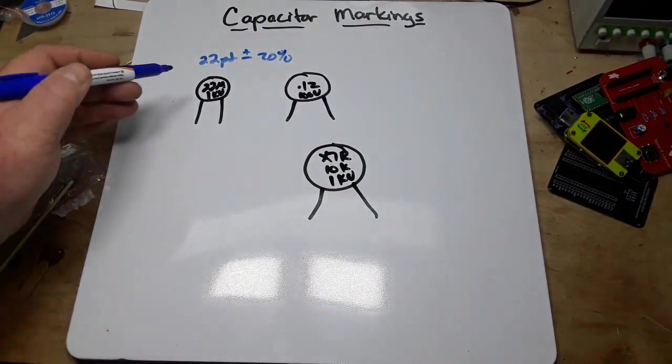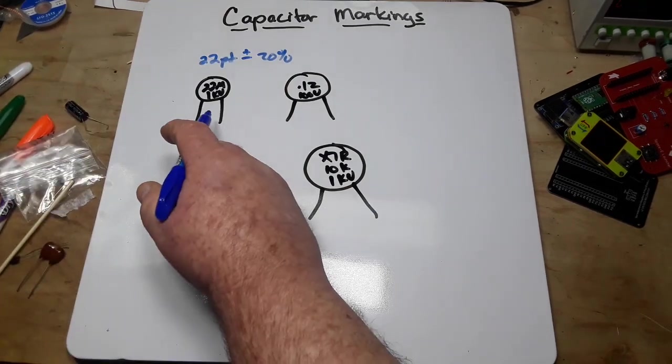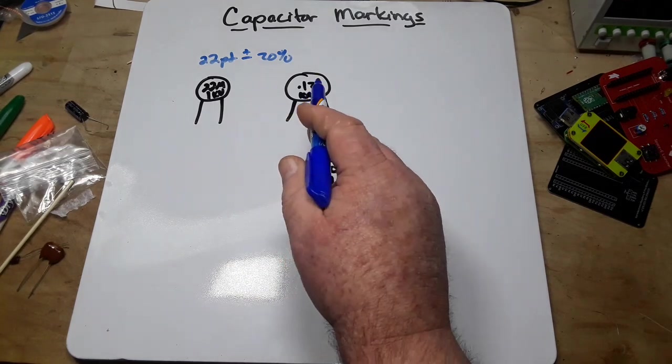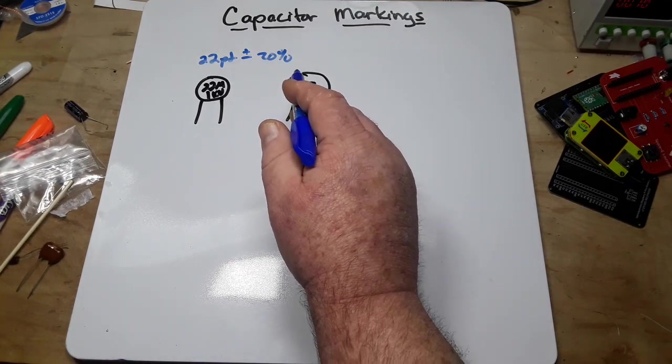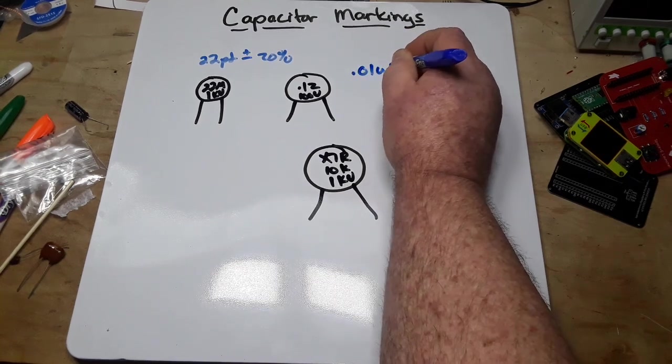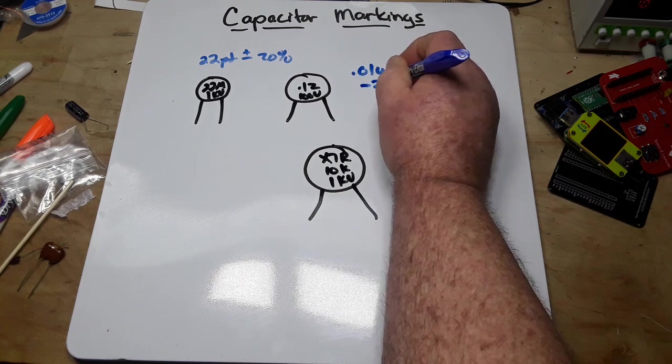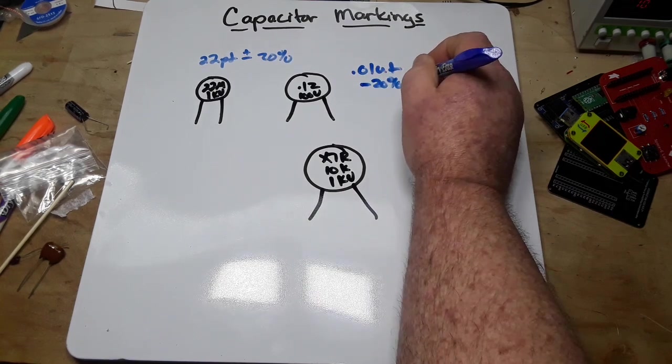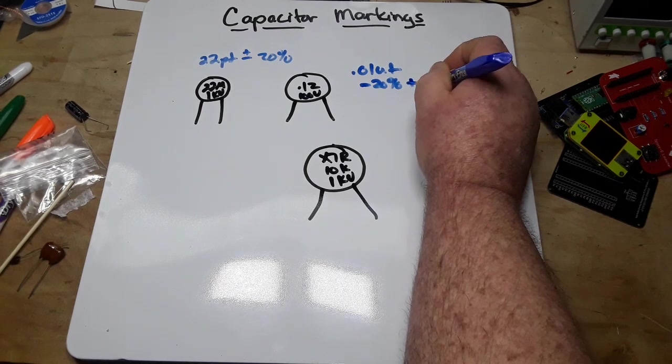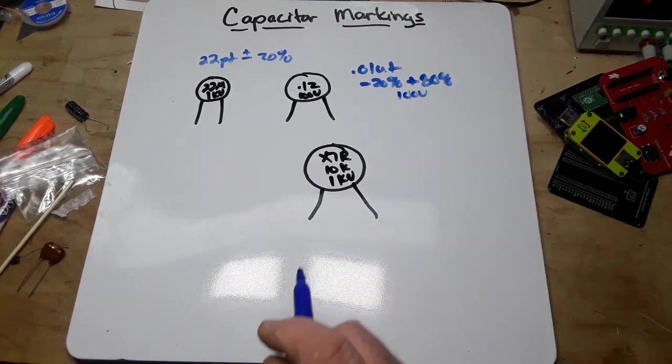So 22M is 22 picofarad plus or minus 20% at 1 kilovolt. Now this one, 0.1Z, would be 0.01 microfarad at minus 20% to plus 80%, and that would be at 100 volts.